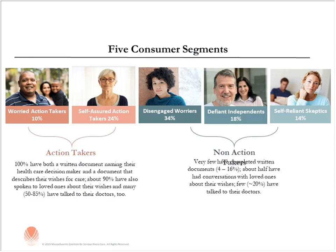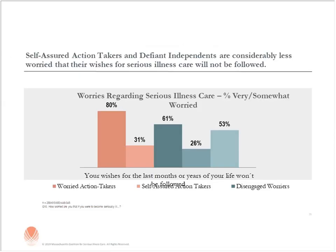This is not to say these are the two most important steps — it's just that people who had done both were clearly different from those who hadn't. One hundred percent of action takers had both documents, and almost 90% had spoken to loved ones, and many had spoken to their doctors. Non-action takers had very few written documents — only about 4 to 15 percent — and about half had conversations with loved ones but very few had conversations with doctors. Among non-action takers, the worried action takers tended to be younger and more diverse, and were the most worried about elements of a future serious illness.